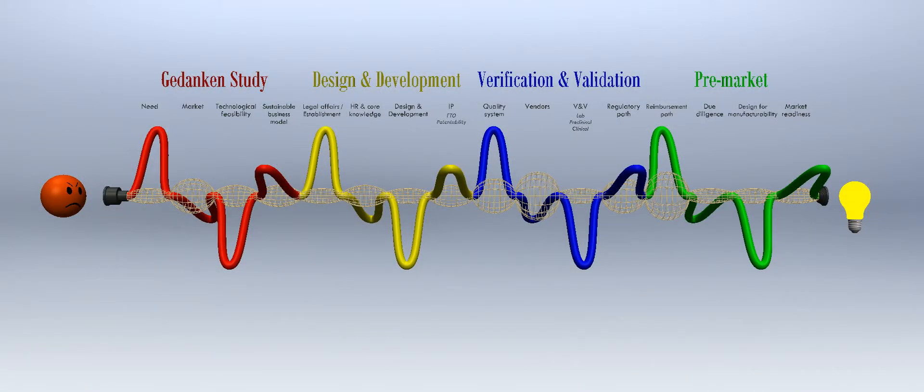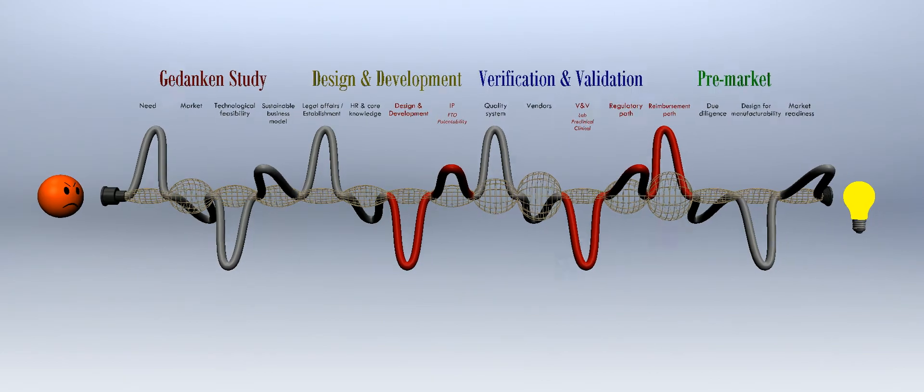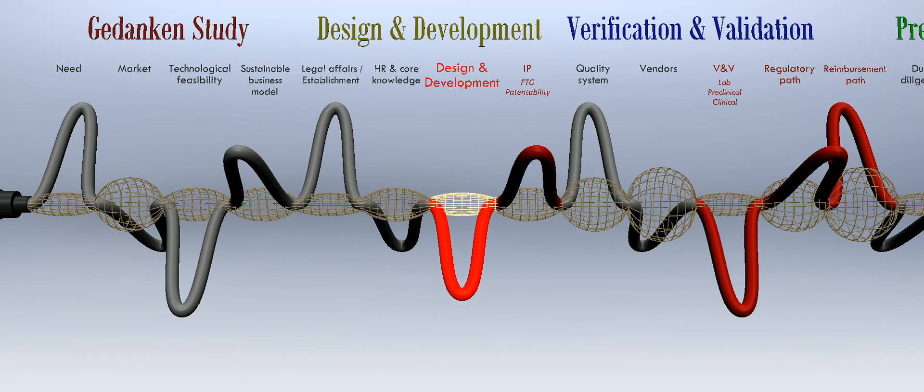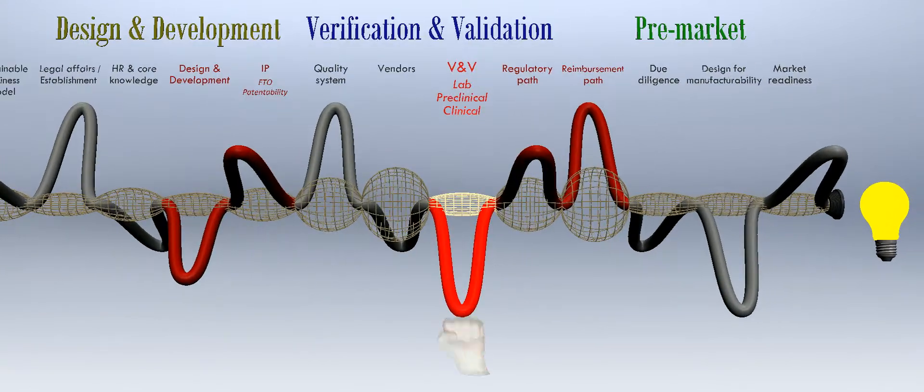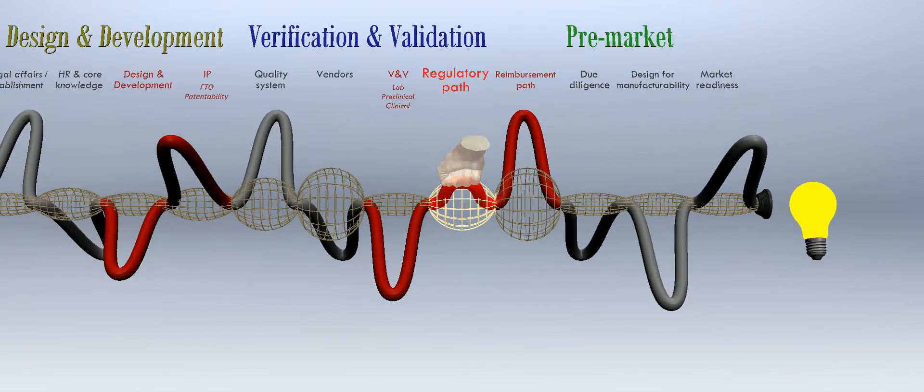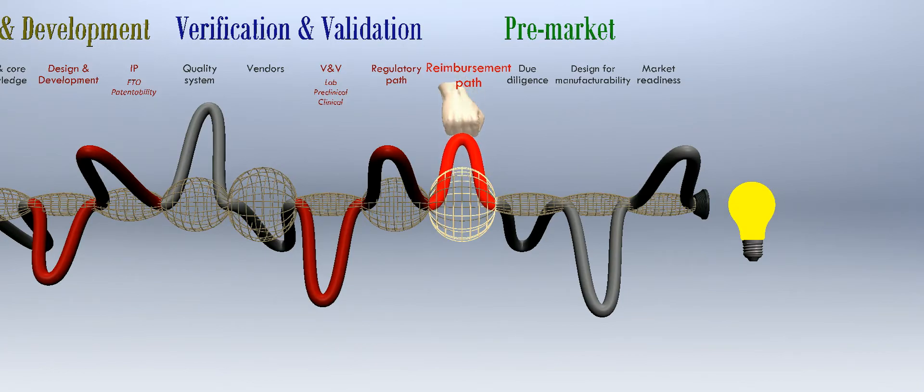In the medical field, the most challenging risk components are typically design and development, IP, V&V, regulatory path, and reimbursement path. Failure to address these risk components may lead the company to a dead end. Typical failures are inability to utilize the chosen technology to meet the required product specifications, inability to protect the core intellectual property or to avoid infringing prior patents, non-addressable adverse results in laboratory, preclinical, or clinical studies, failure to receive regulatory approvals, or reimbursement policies that cannot sustain a viable business model.